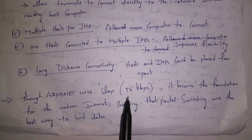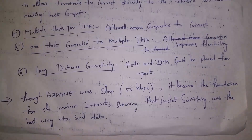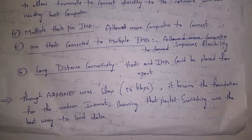ARPANET is very slow — it transfers data at only 56 kbps. However, based on ARPANET, the internet was introduced. Even in the internet, packet switching is used, where data is transferred in the form of packets.